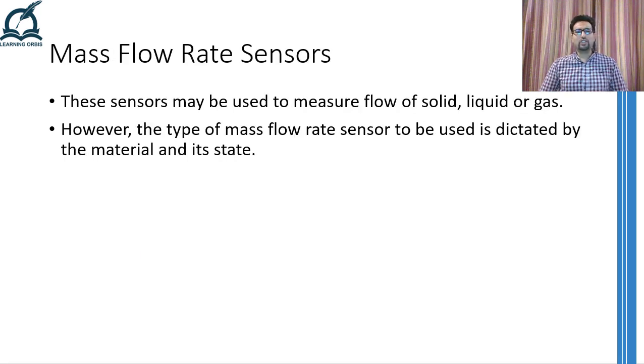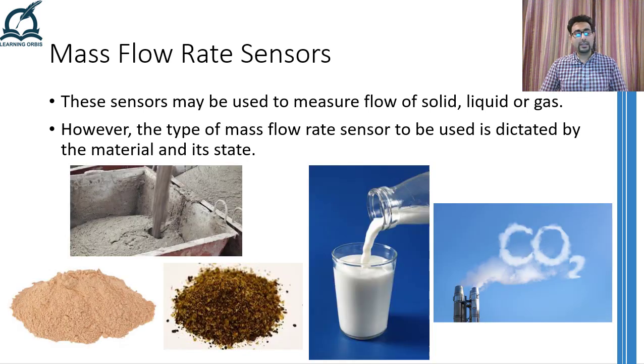To start the discussion of mass flow rate sensors, these sensors can be used to measure the flow of solids, liquids, or gases. Note that by solids, I mean solids in powdered, grinded, or in form of a slurry. The type of the flow rate sensor that can be used is dictated by the state in which the material is. That is, some flow rate sensors are more suitable for powdered or grinded materials, whereas the others are more suitable for materials in fluid form.